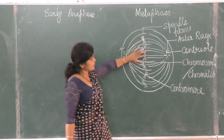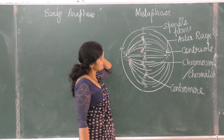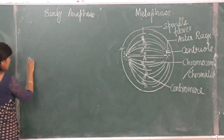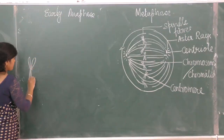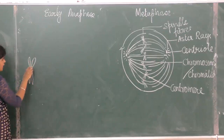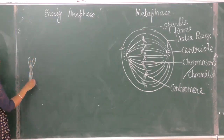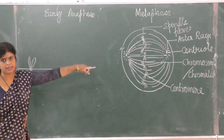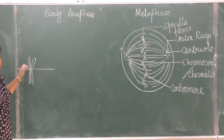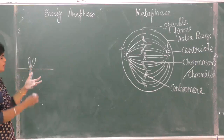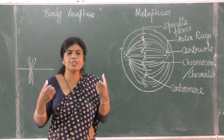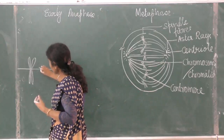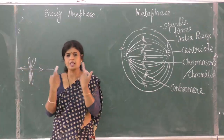Once attachment has taken place — the spindle fibers have got attached to the centromere — this is the duplicated chromosome. One chromatid is here, the other chromatid is here. One spindle is on this side, the other is on this side. After this attachment of the spindle with the kinetochore of the centromere, the spindle fibers start to contract.